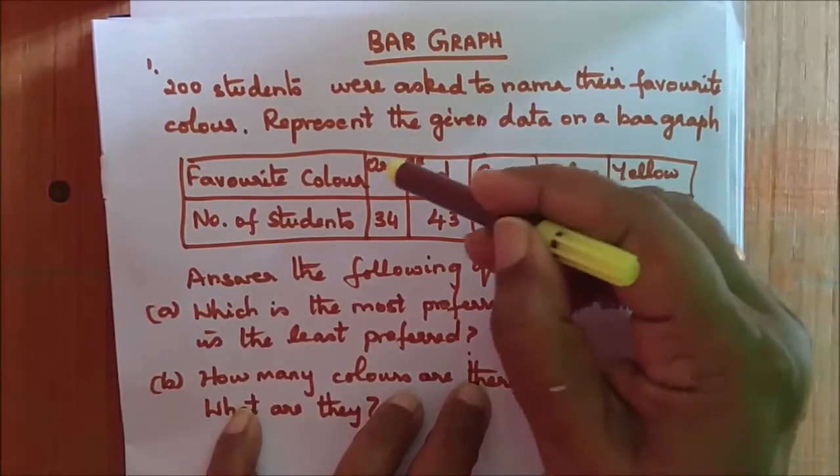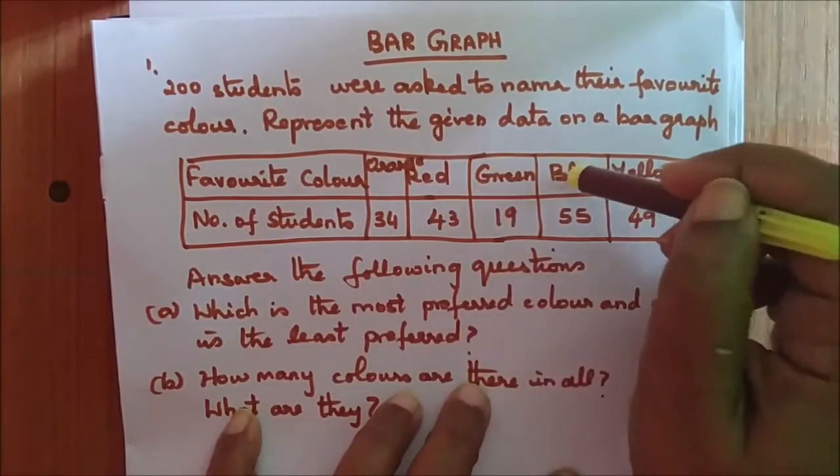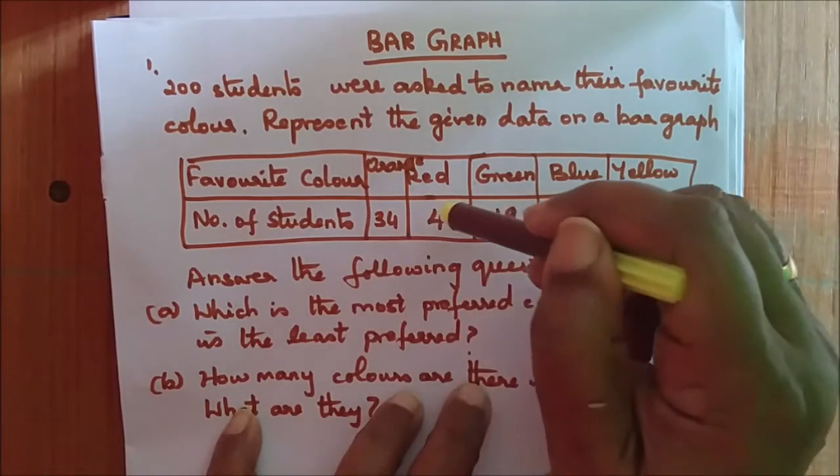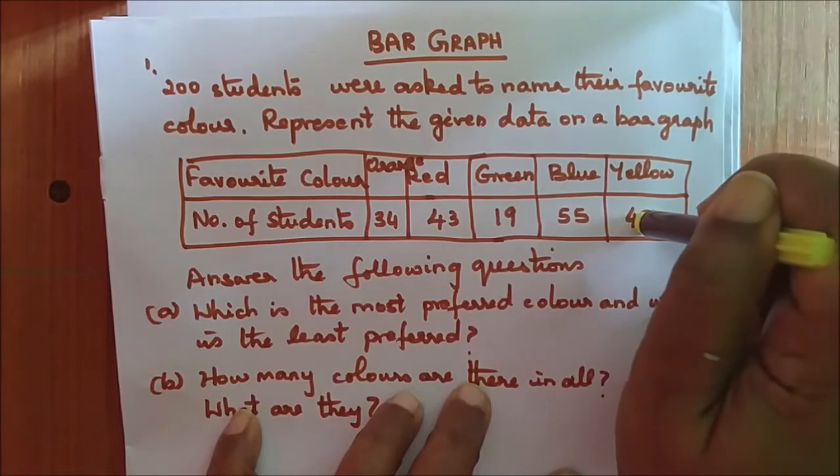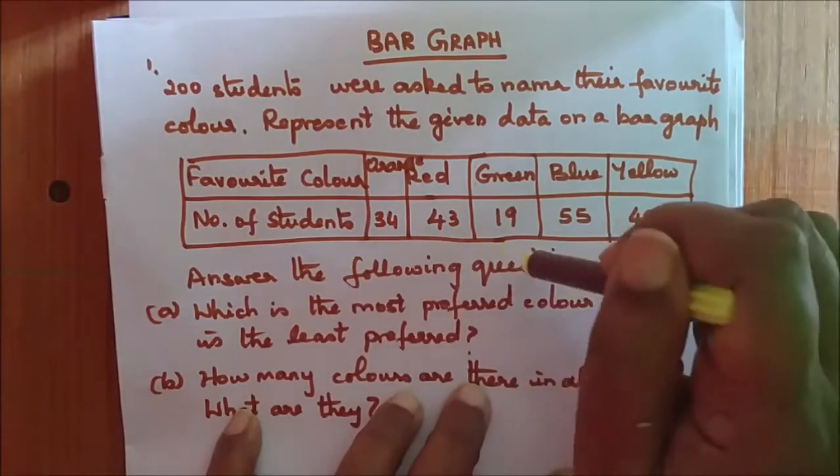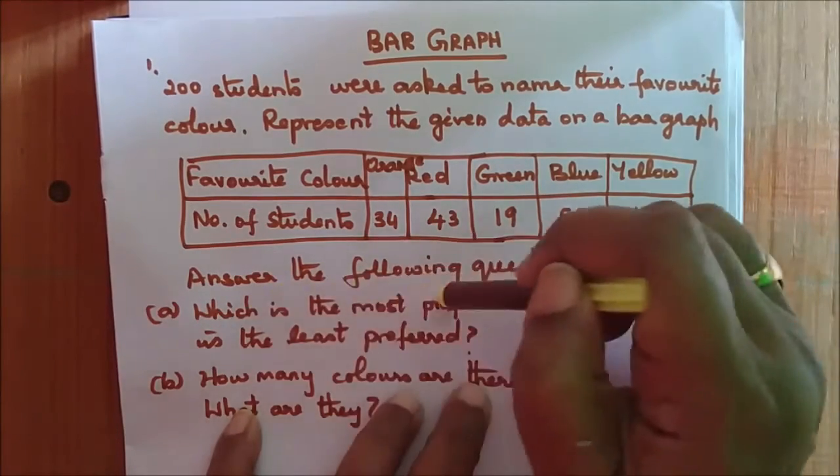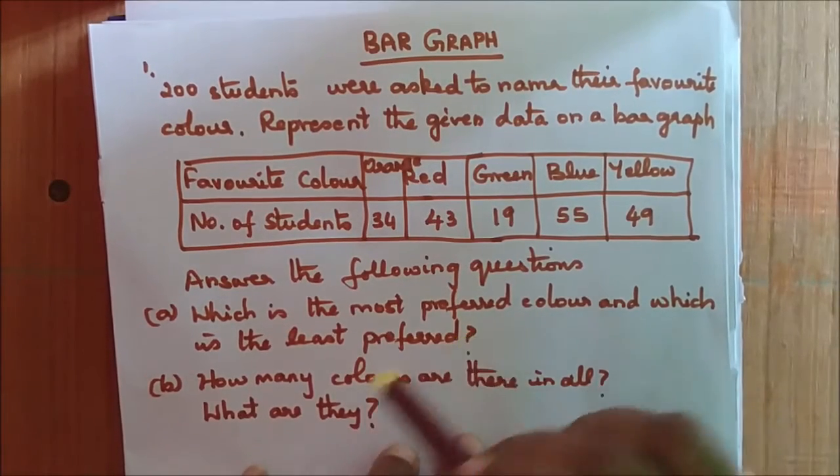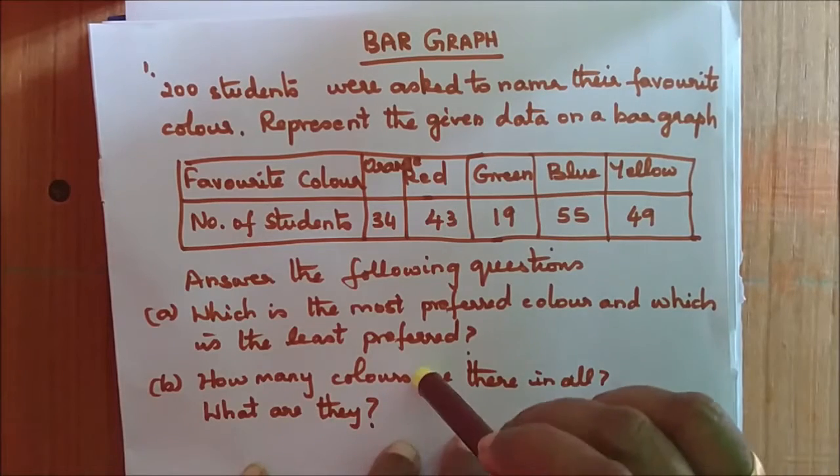The favorite colors are red, orange, green, blue, yellow. The number of students namely 34, 43, 19, 55 and 49. Answer the following questions: Which is the most preferred color and which is the least preferred? How many colors are there in all? What are they?